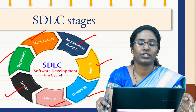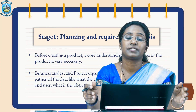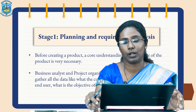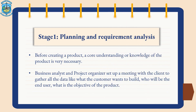Let us see about each stage one by one. The first stage of SDLC is planning and requirement analysis. Before creating a product, a core understanding or knowledge of the product is very essential. It is very important to understand the objective of the product. So here, the business analyst and the project organizers set up a meeting with the client to gather all the data — like what the customer wants to build, who will be the end user, and what the actual objective of the project is.